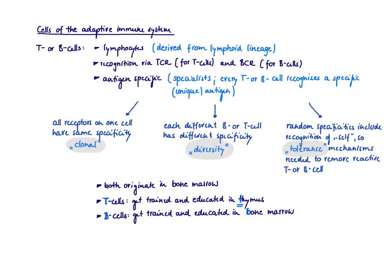So next, I want to discuss a couple of general principles of this T cell and B cell receptors. So first of all, I want to say that all receptors on one single T or B cell have the same specificity for one antigen, and we call this principle clonality, or these receptors are clonal.